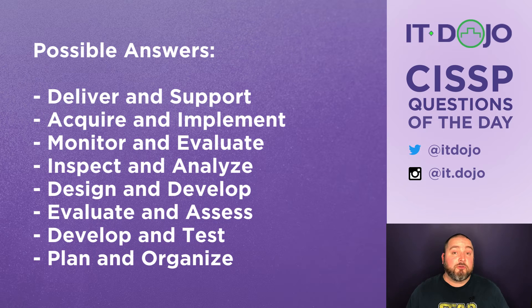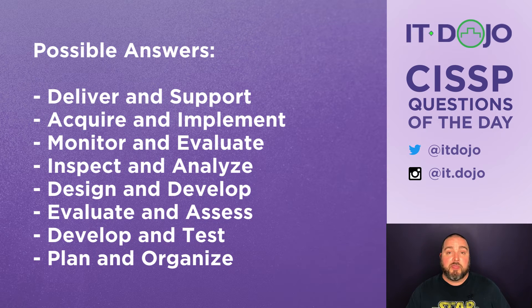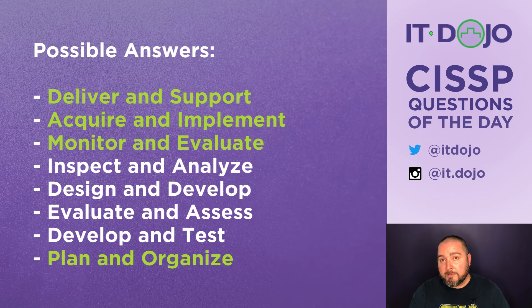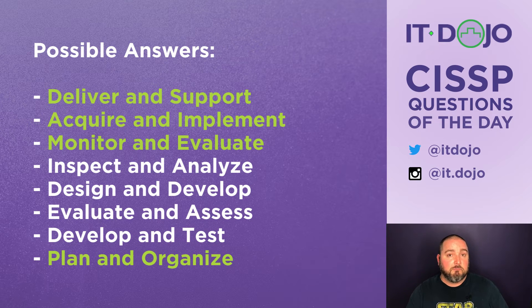COBIT's 34 processes are broken into four broad groups: Plan and Organize, Acquire and Implement, Deliver and Support, and Monitor and Evaluate.